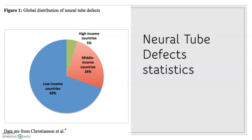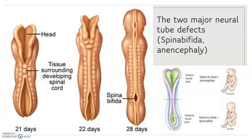Neural tube defects are genetic. They are considered a complex disorder because the combination of multiple genes and multiple environmental factors is responsible for them. If a couple has one child with neural tube defects, their odds of having a second child with neural tube defects increase by around 2–5%. Now let's talk about the two major types of neural tube defects.